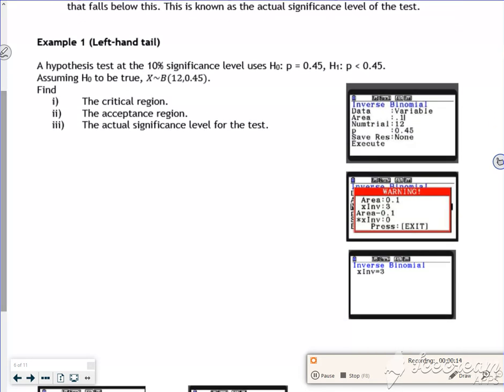So it says here the hypothesis test at 10% significance level uses H0, H1, so we're going to identify the critical region. So we know from this here that it's one tail and I'm looking for the boundary for the bottom 0.10.